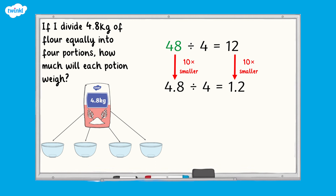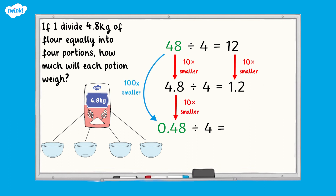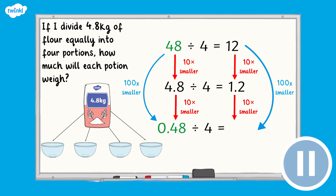Could you use these facts to help you solve this division: 0.48 divided by 4? Top tip: when the number being divided becomes 10 or 100 times smaller, the answer also becomes 10 or 100 times smaller. So because 48 divided by 4 equals 12 and 4.8 divided by 4 equals 1.2, that means 0.48 divided by 4 equals 0.12.